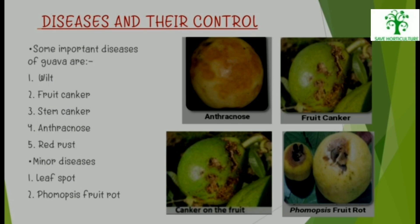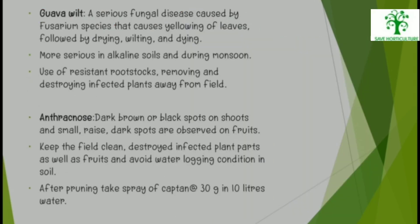Diseases and Their Control: Some important diseases of Guava are Wilt, Root Canker, Stem Canker, Anthracnose, and Red Rust. Minor diseases include Leaf Spot and Phomopsis Root Rot. Guava Wilt is a serious fungal disease caused by Fusarium species, causing yellowing of leaves followed by drying, wilting, and dying. It is more serious in alkaline soils and during monsoon. Use of resistant rootstocks and removing and destroying infected plants are management strategies. For Anthracnose: dark brown or black spots on shoots and small raised dark spots on fruits are observed. Keeping the field clean, destroying infected plant parts, and avoiding waterlogging are management strategies. After pruning, take spray of Captan at 30 grams in 10 litres of water.